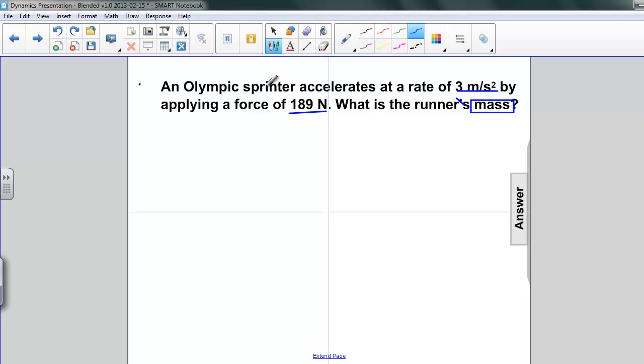So let's do this. Again, we start with writing down what we know. What we know is the acceleration, which is 3 meters per second squared, and the net force that's being applied by the sprinter, 189 newtons. We're asked to find the mass.